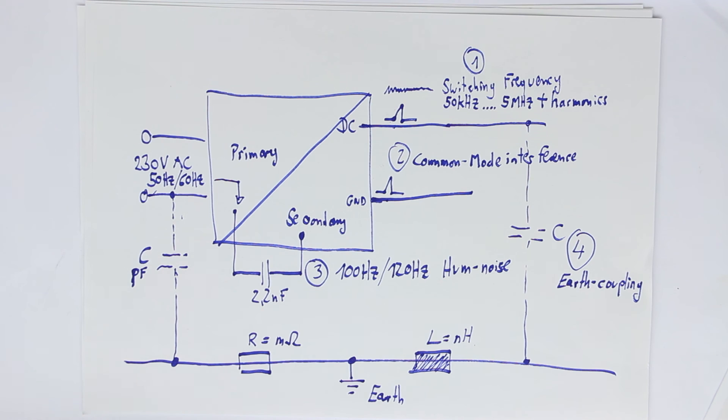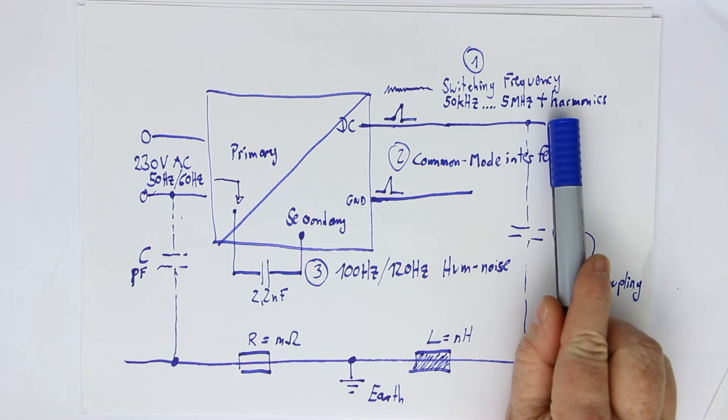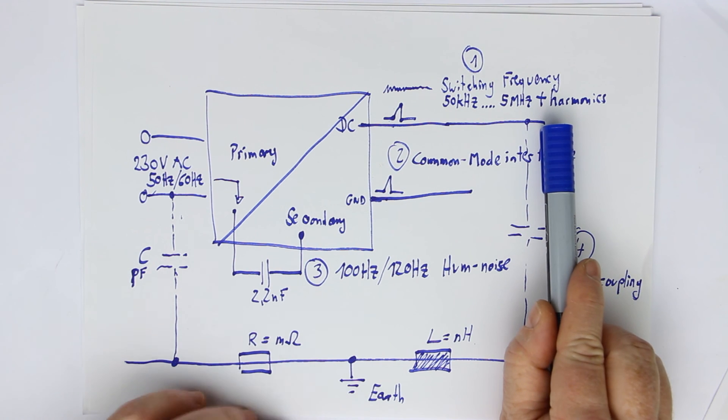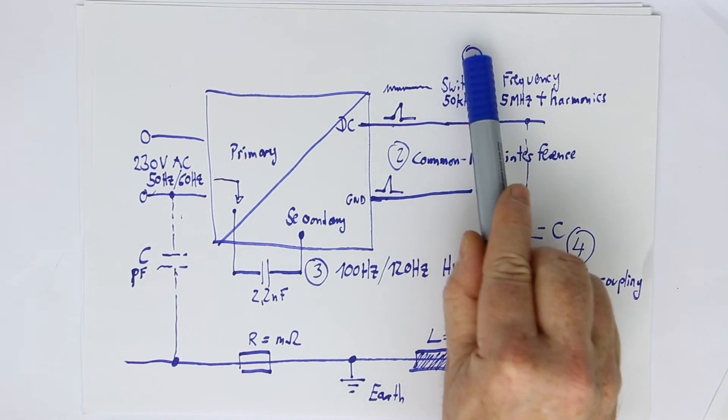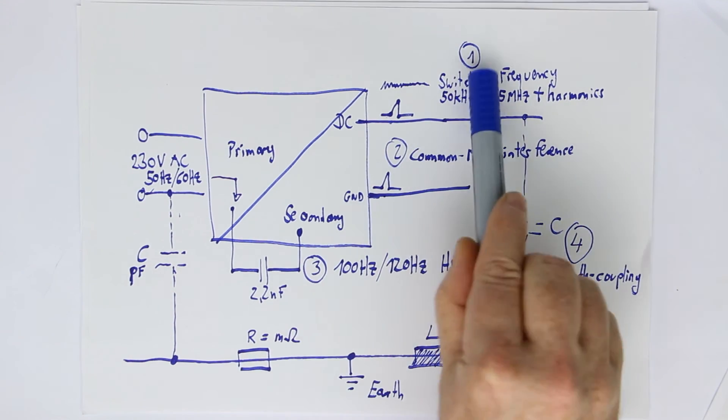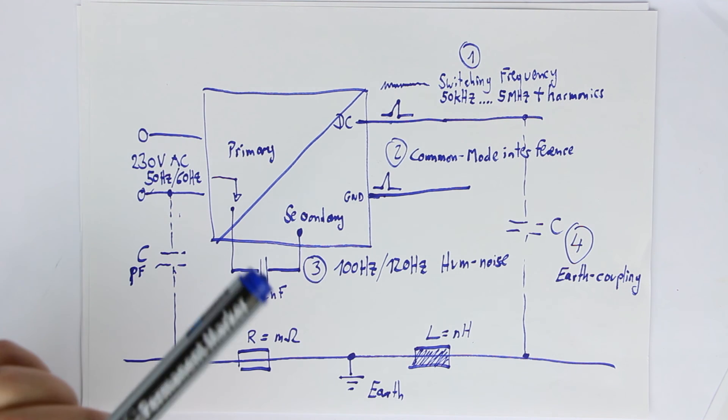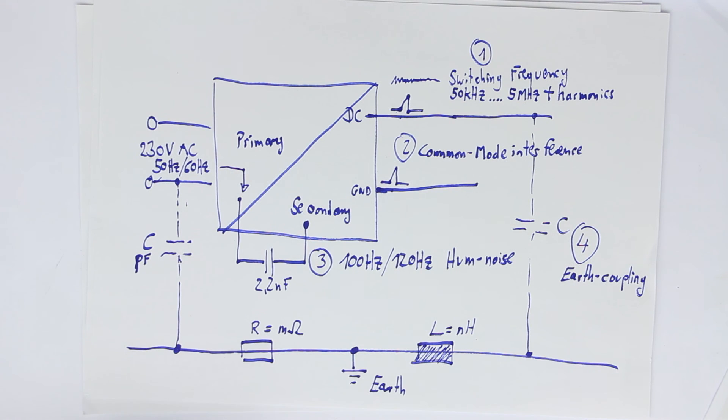You might think, well, I'll just take a 1000 microfarad capacitor and this will filter out all the noise. We'll later see in part three that this is absolutely not sufficient. When you really want a very clean DC supply voltage, you must construct a multi-stage filter where all of these four sources of noise are taken care of and where all these four sources are separately dealt with and filtered out with specialized components.